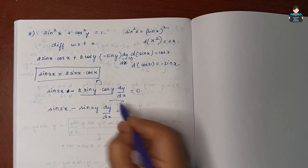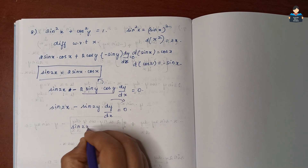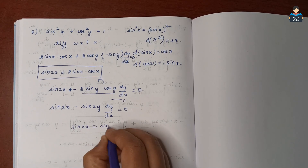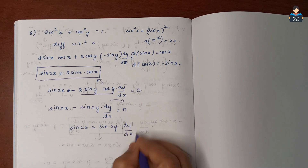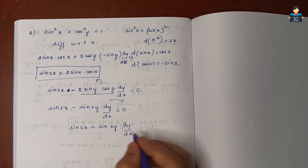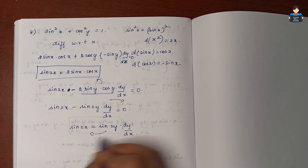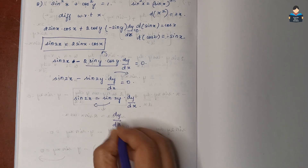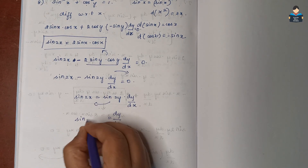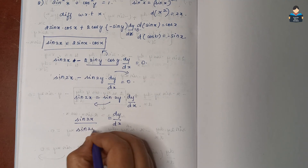Therefore sin 2x = sin 2y · dy/dx. Dividing both sides by sin 2y: dy/dx = sin 2x / sin 2y. This is the answer.